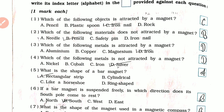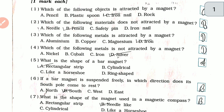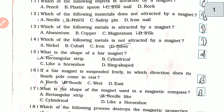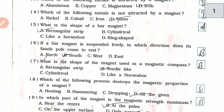Number 1. Which of the following objects is attracted by a magnet? Iron nail. Number 2. Which of the following material is not attracted by a magnet? Pencil. Number 3. Which of the following metals is attracted by a magnet? Iron. Number 4. Which of the following metals is not attracted by the magnet? Silver.